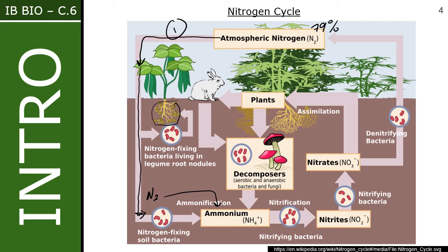Ammonium is not actually a form of nitrogen easily used by organisms. The more useful form is nitrate. So there are nitrifying bacteria which undergo nitrification, converting NH₄⁺ into NO₂⁻. That nitrite is still not the best form, so nitrifying bacteria then add an extra oxygen to create a nitrate.